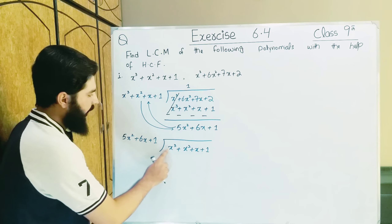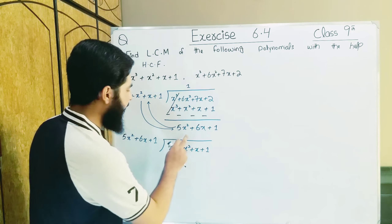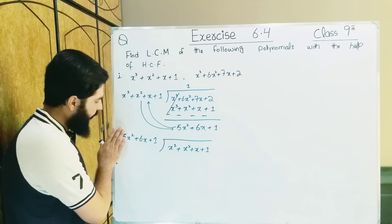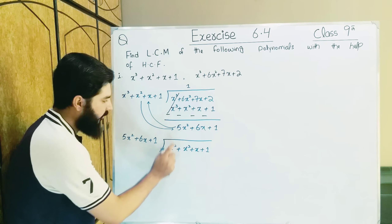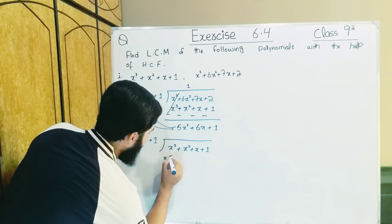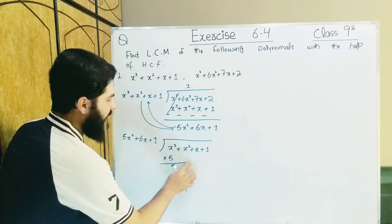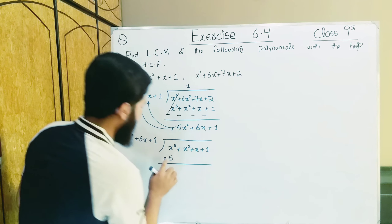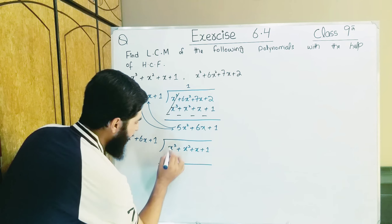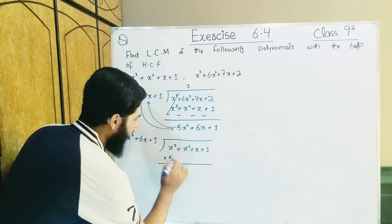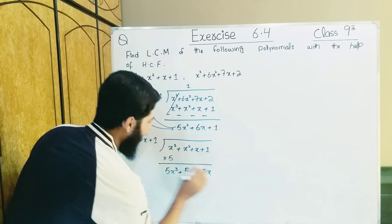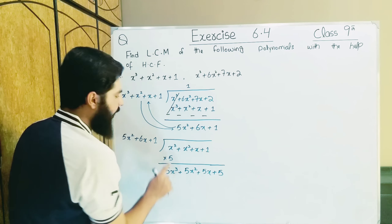This is 5x². If we multiply anything with it, we get 5x below, so the question doesn't solve. Notice there is a 5 here. If it were only x² without the 5, we could put x to get x³. But since there is 5x², to solve this we multiply the whole expression by 5. So all our written terms get multiplied by 5.